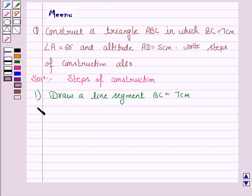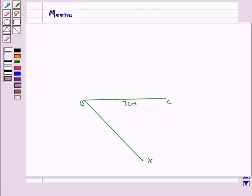Now, the second step is draw the angle CBX equal to 60 degrees. So, you make an angle of 60 degrees CBX using the protractor.